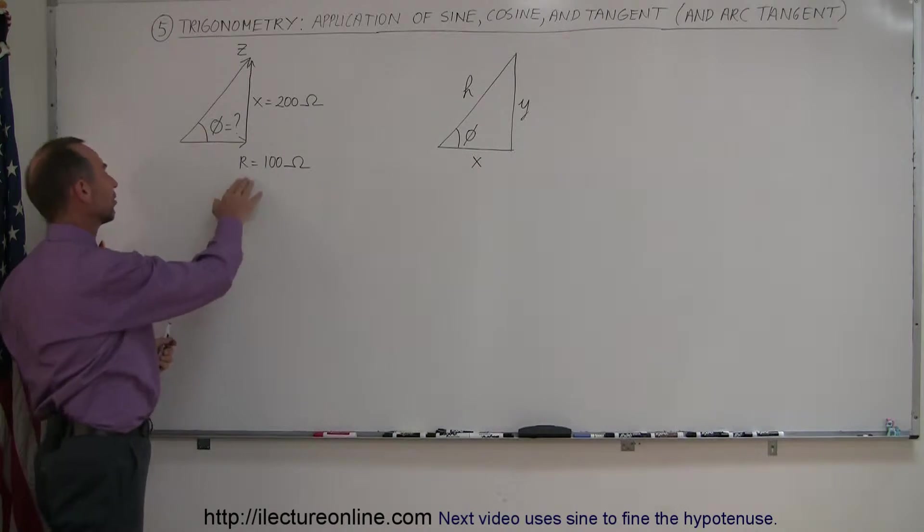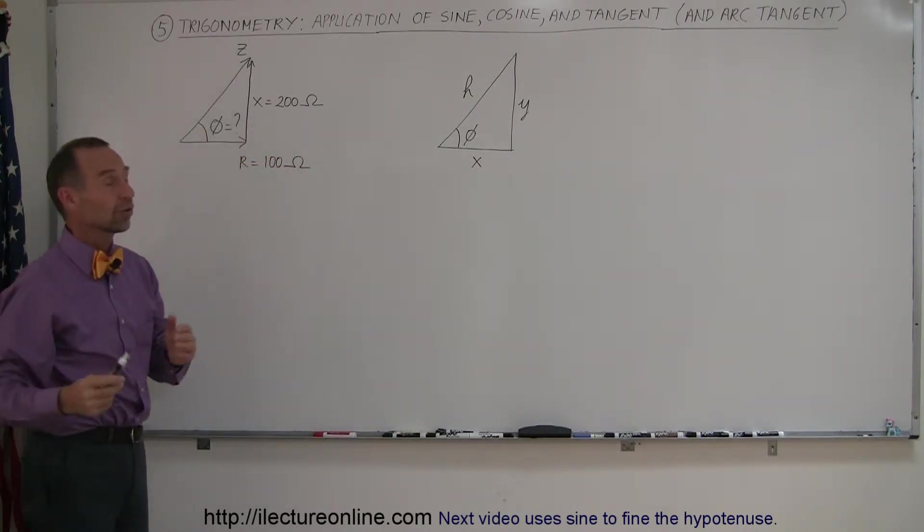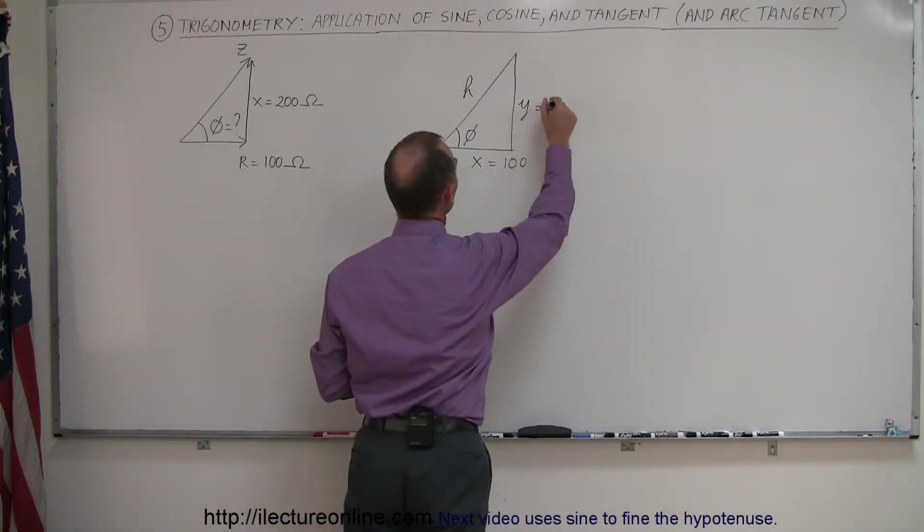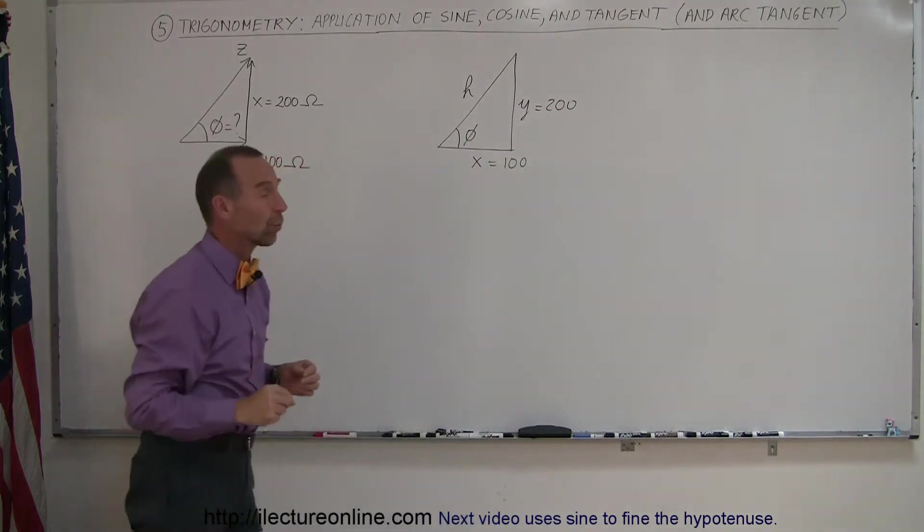You don't need to know what those things are. In this case, the resistance is 100 ohms. The reactants is 200 ohms. So here's our equivalent triangle in trigonometry. So let's call this 100, and let's call this equal to 200. And what we're supposed to find is this angle right here of this right triangle.